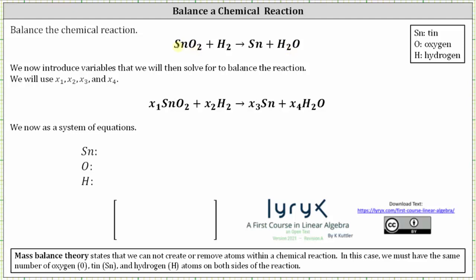Because the reaction has four elements or compounds, we introduce four variables. I will use x sub one through x sub four, which become the coefficients in the chemical reaction. And now we write a system of equations for each of the three atoms.